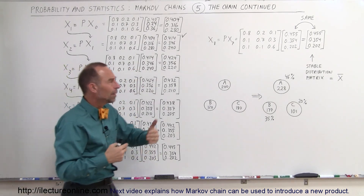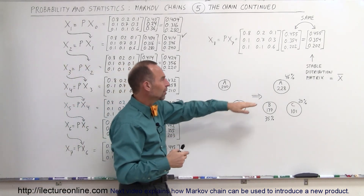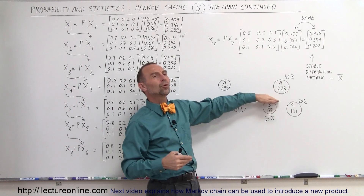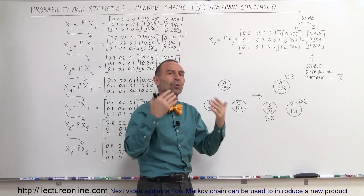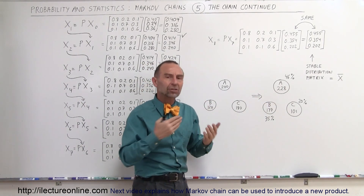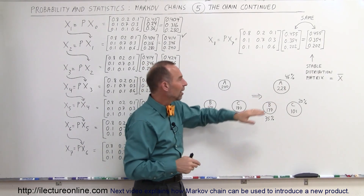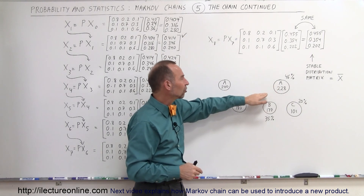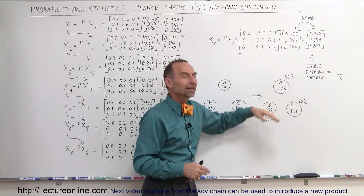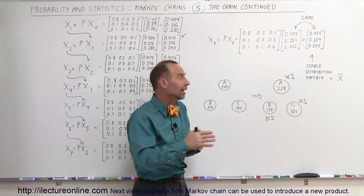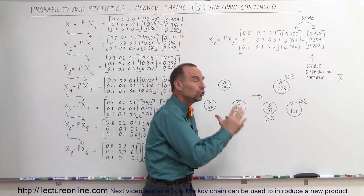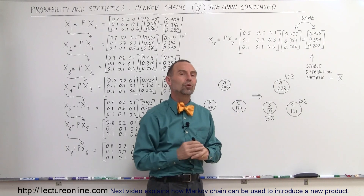Maybe something bad happened in store A — the prices went too high, they had bad help, bad customer service — and people begin to stream away from A. Then the probability matrix will change again and we'll have a new distribution.